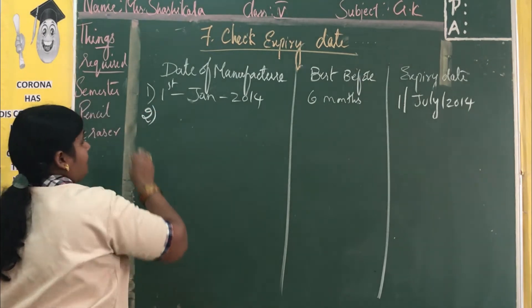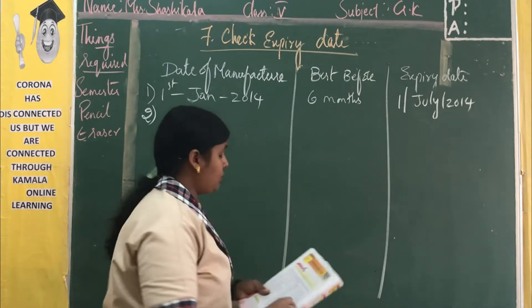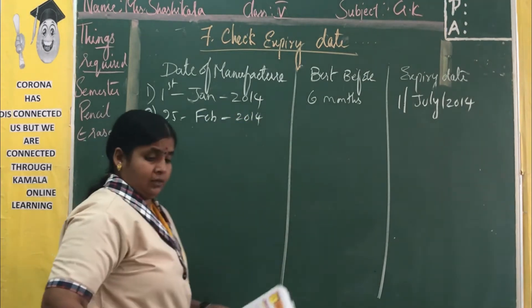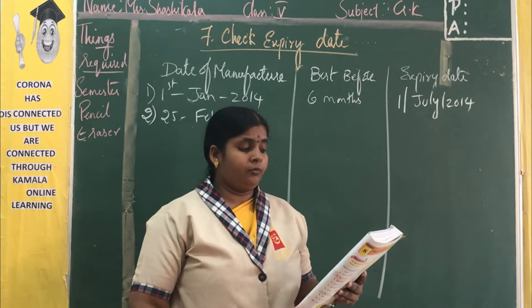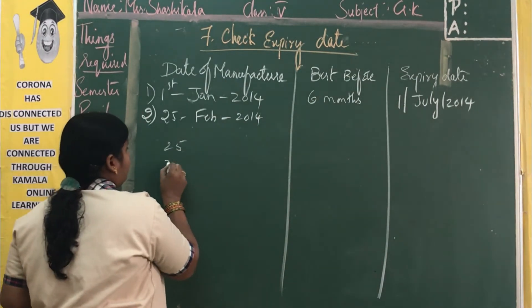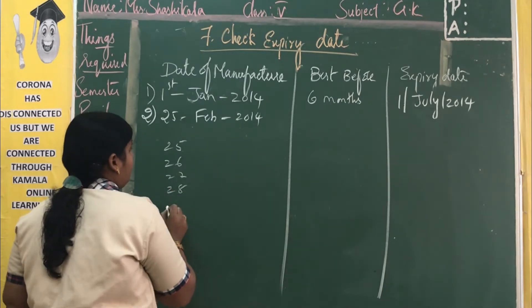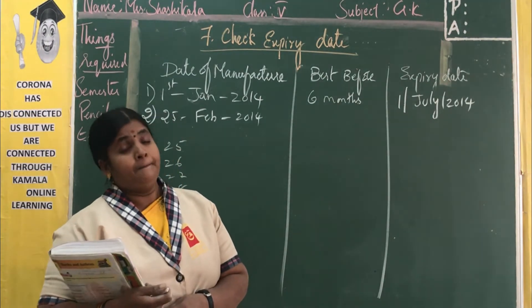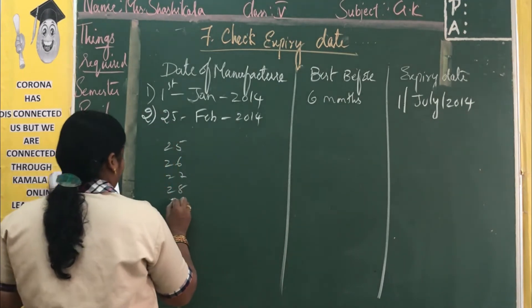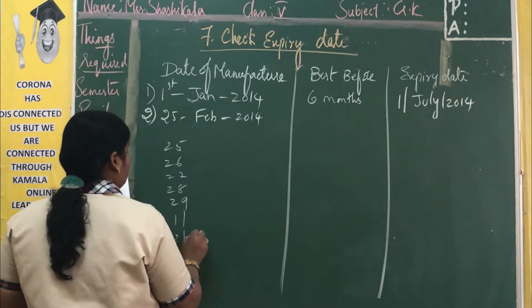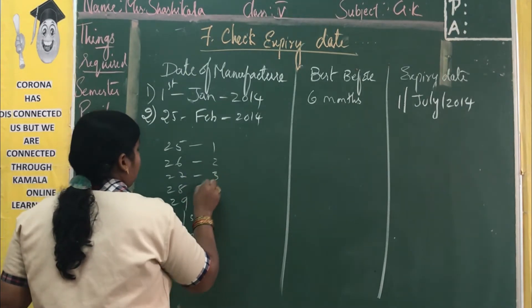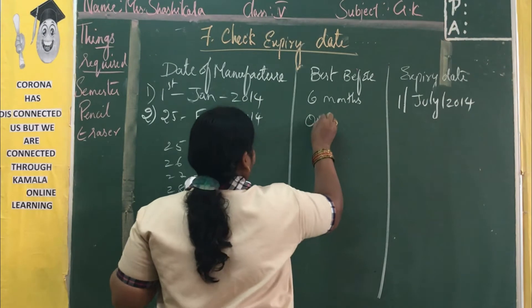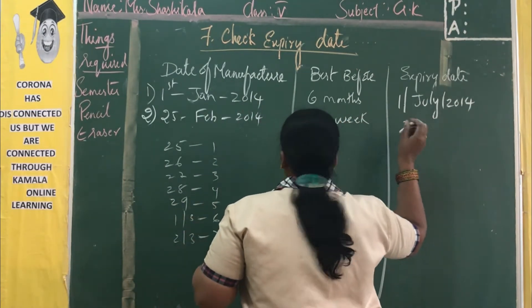Second one: 25th February 2014, best before 1 week. So from 25th: 26th, 27th, 28th — in 2014, for every 4 years we get a leap year, so February has 28 days. Then 28th, 1st March, 2nd, 3rd, 4th, 5th, 6th, 7th — after 7 days the answer will be 2nd March 2014.